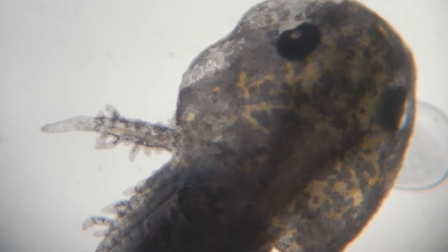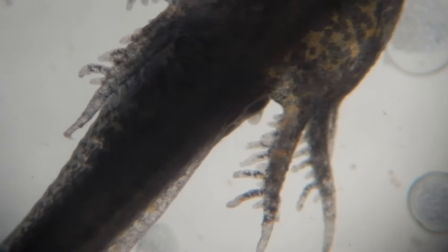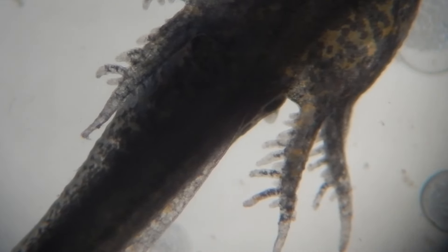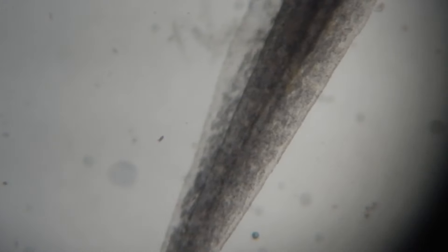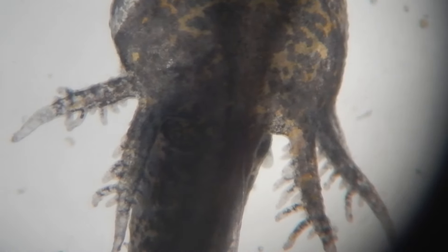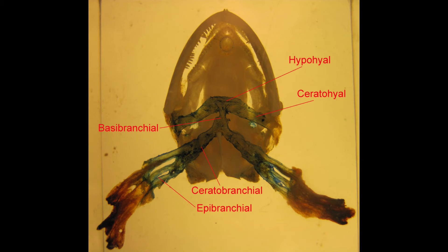And there are even some salamanders like the axolotl here which can retain them as adults. These are larvae axolotls which have external gills as larvae as many salamanders do, but the adults will actually retain these because they are aquatic and retain some juvenile traits.